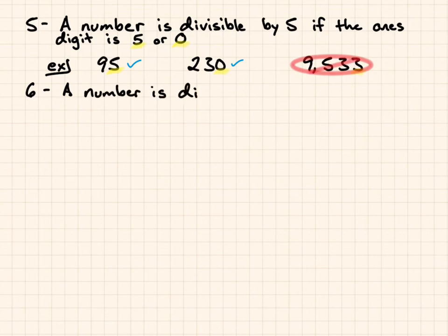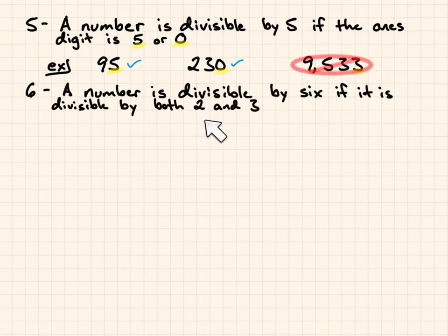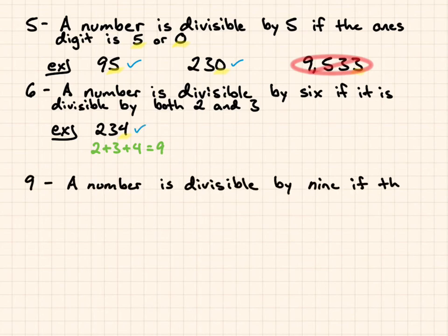Now, divisibility by 6. A number is divisible by 6 if it is divisible by both 2 and 3. So first divisible by 2, it has to end in a 0, 2, 4, 6, or 8. And 234 ends in a 4. Now I add the digits to see if it's divisible by 3. 2 plus 3 plus 4 is 9. 9 is divisible by 3, so that is true. That is divisible.